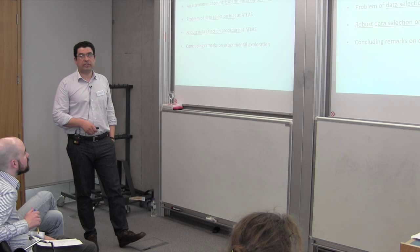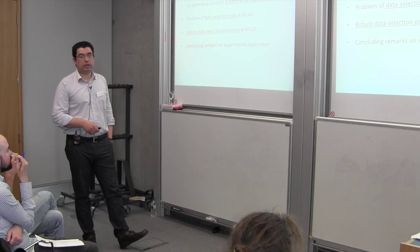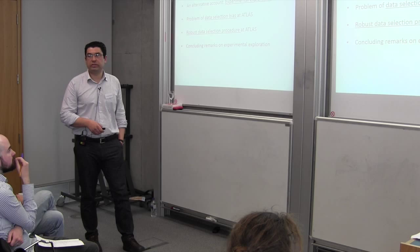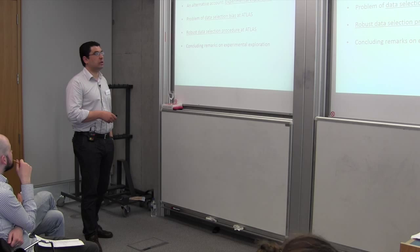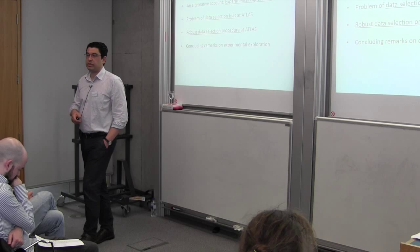I will describe the problem of data selection bias, and then show how this problem has been addressed by experimenters using a particular experimental strategy, which I call the robust data selection strategy. I will finish with some concluding remarks on the nature of experimental exploration in the context of high-energy physics.